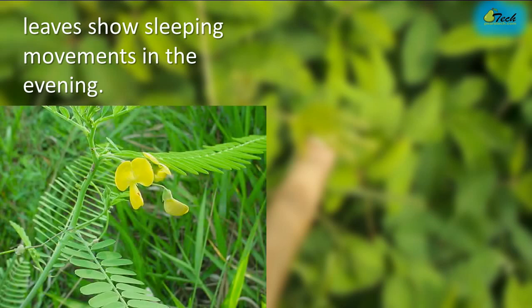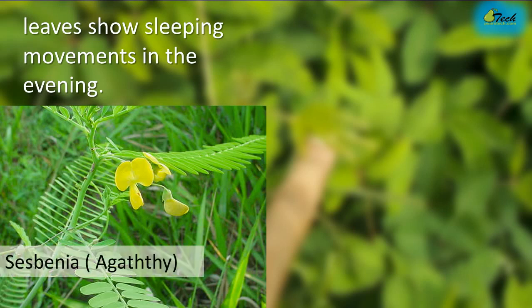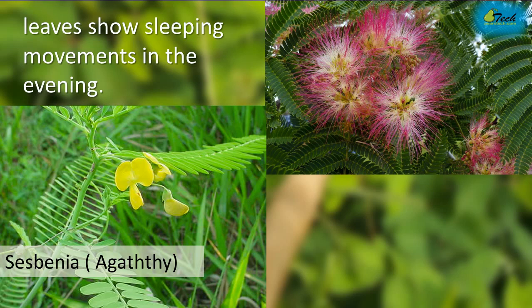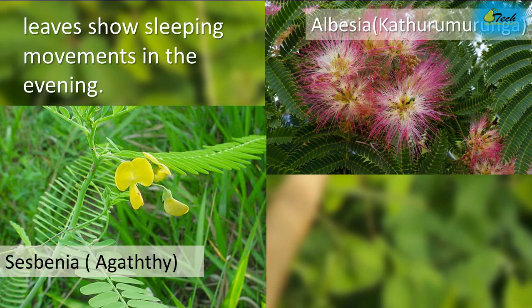Some other plants also show sleeping leaf movements in the evening. One is Sesbania — in Tamil it's called ahati — a plant used in salads. Another is Albizia, called katharu murunga in Tamil, a large tree whose leaves also fold in the evening.